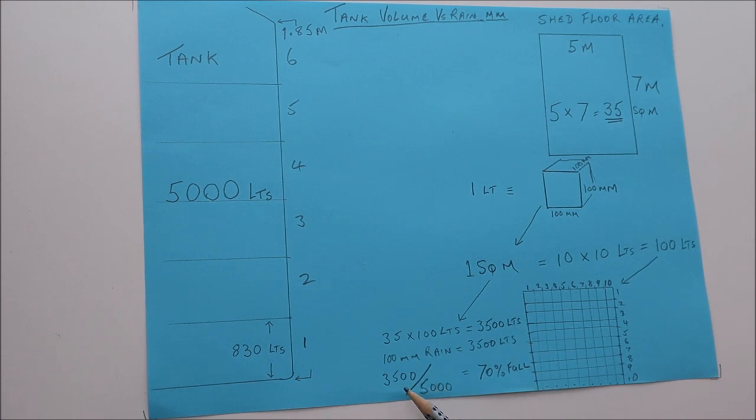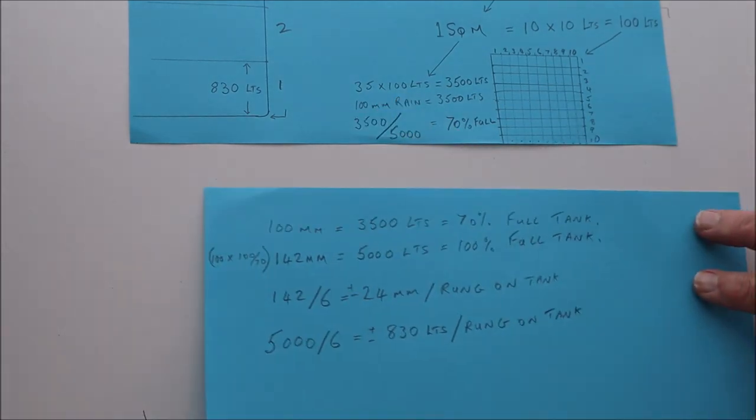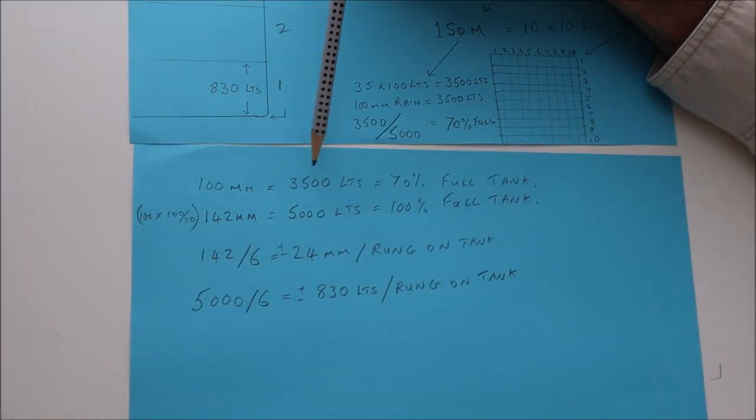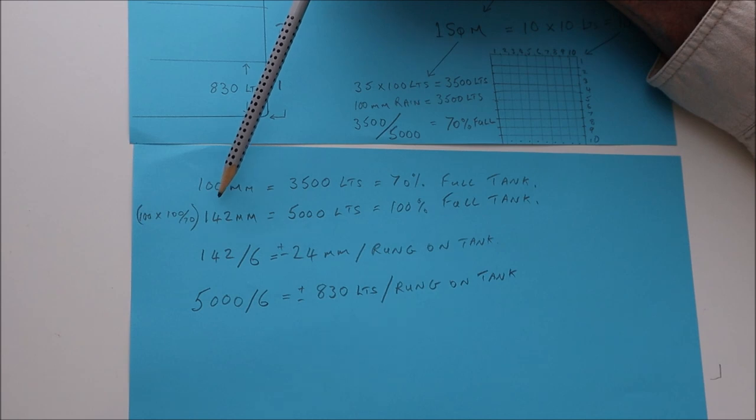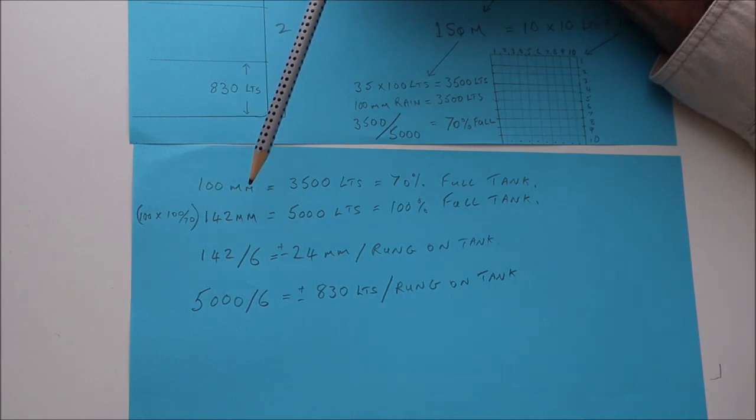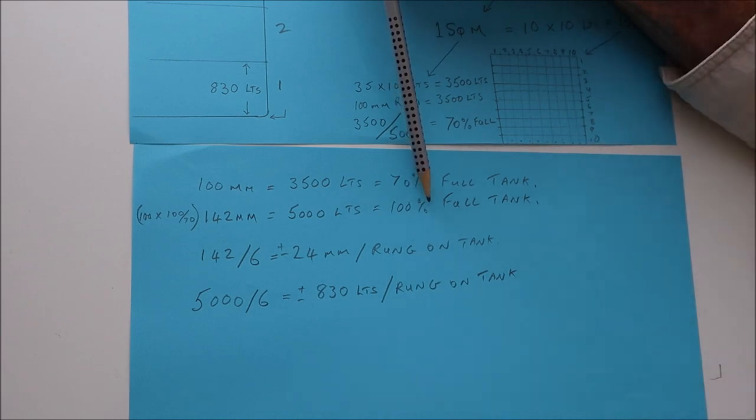If we take 3,500 and divide it by 5,000, that gives us 70 percent full tank. So 100 millimeters is equivalent to 3,500 liters, which is 70 percent full. I've calculated with this formula here: 100 times 100 divided by 70 will give you 142 millimeters to get 5,000 liters and give your tank 100 percent full.